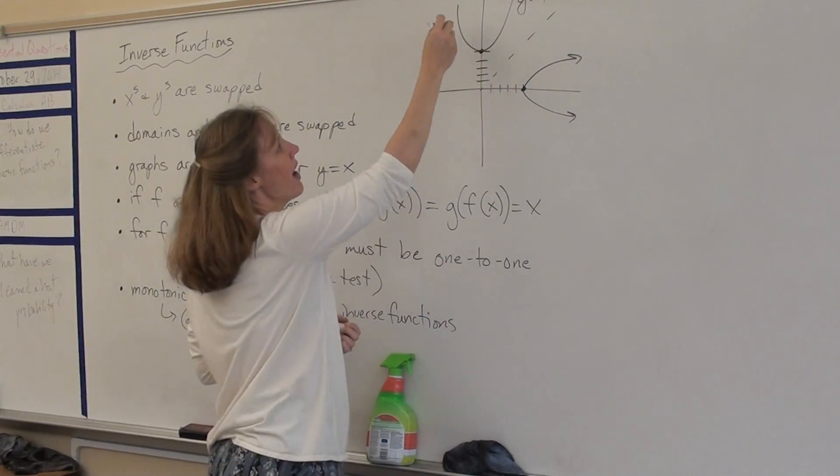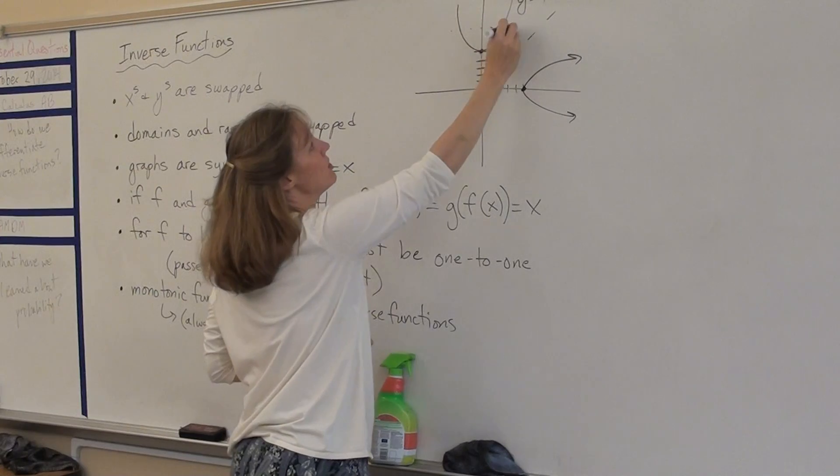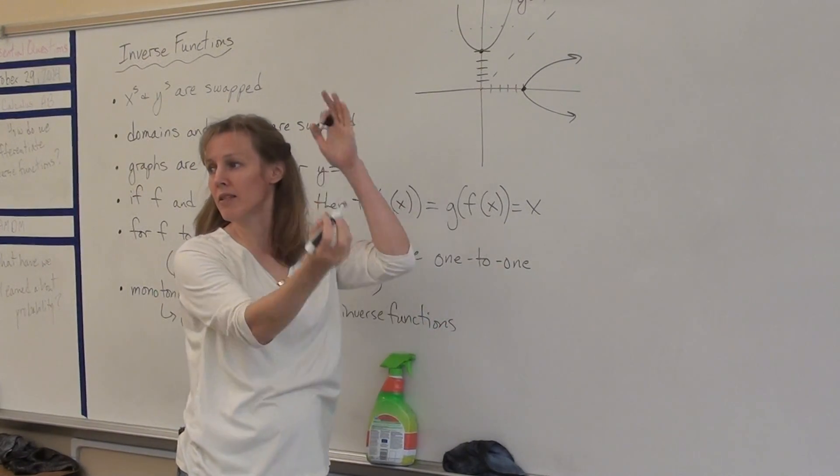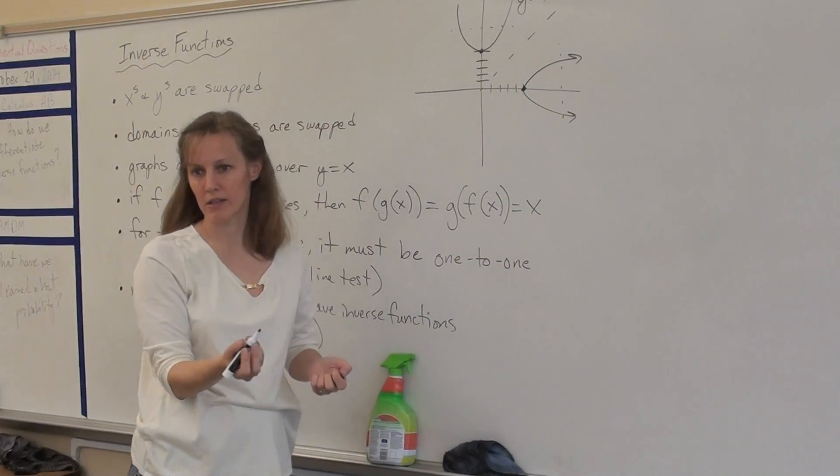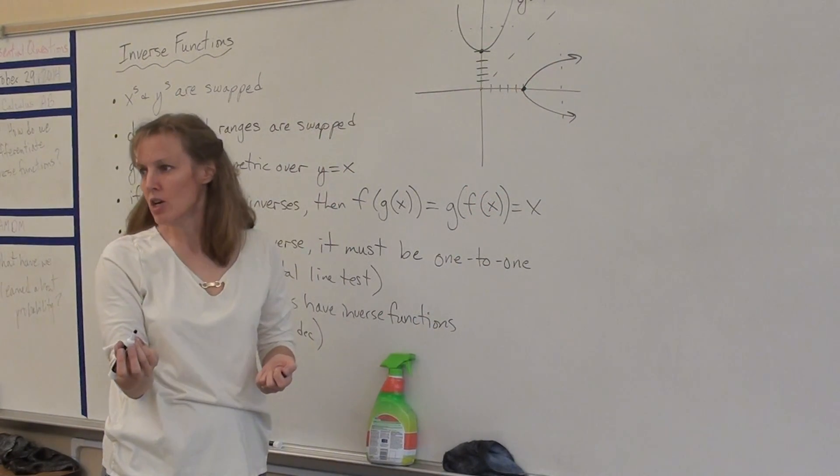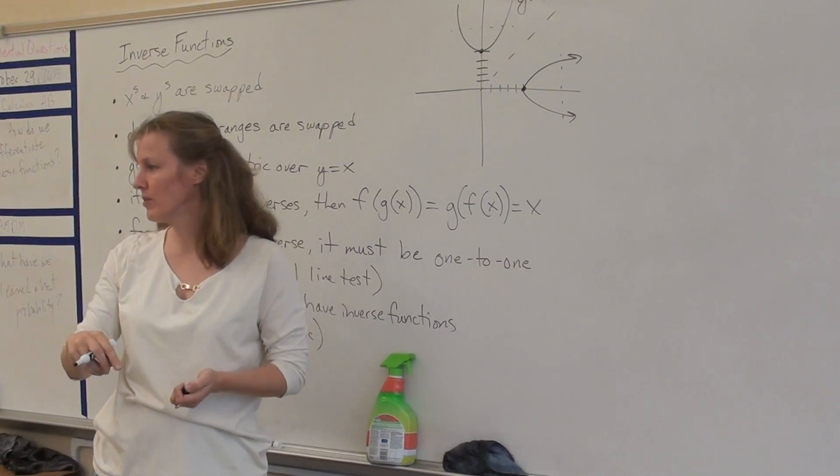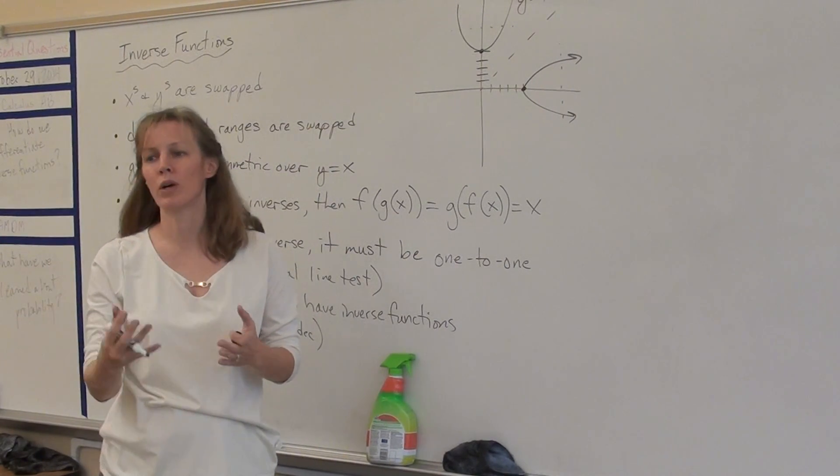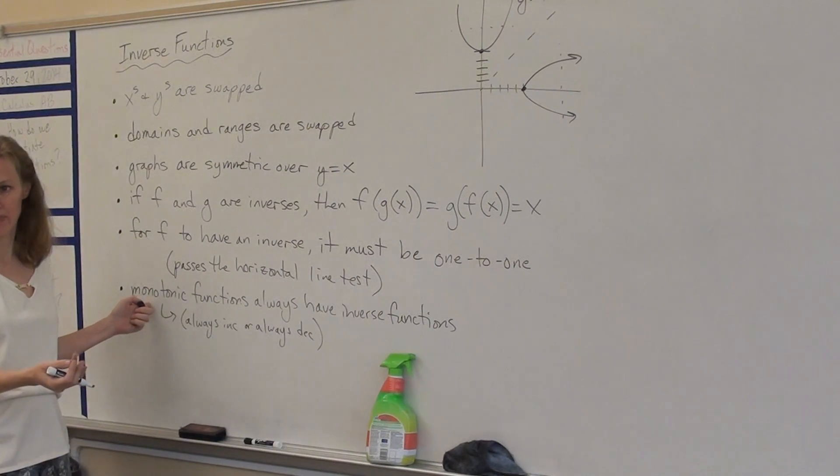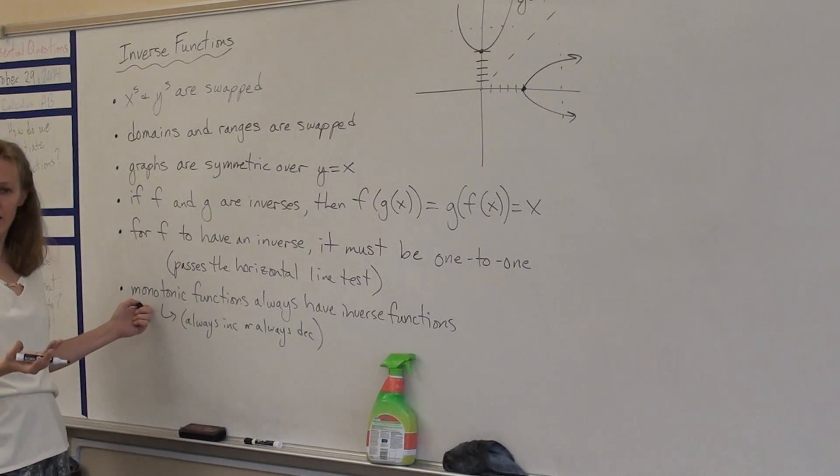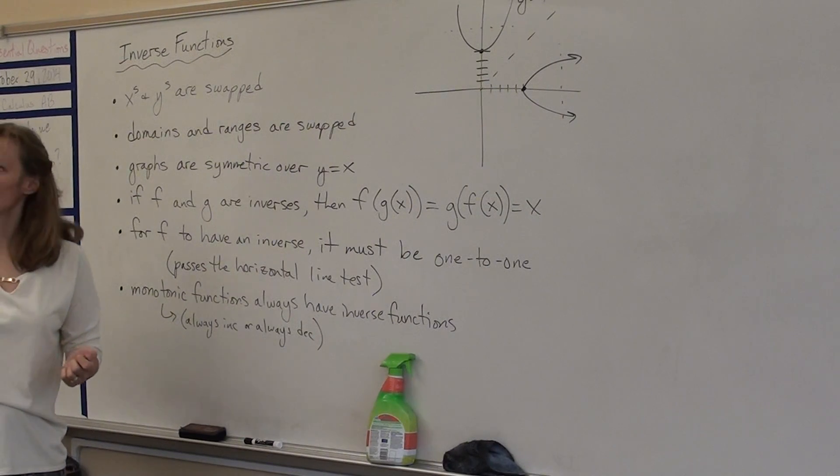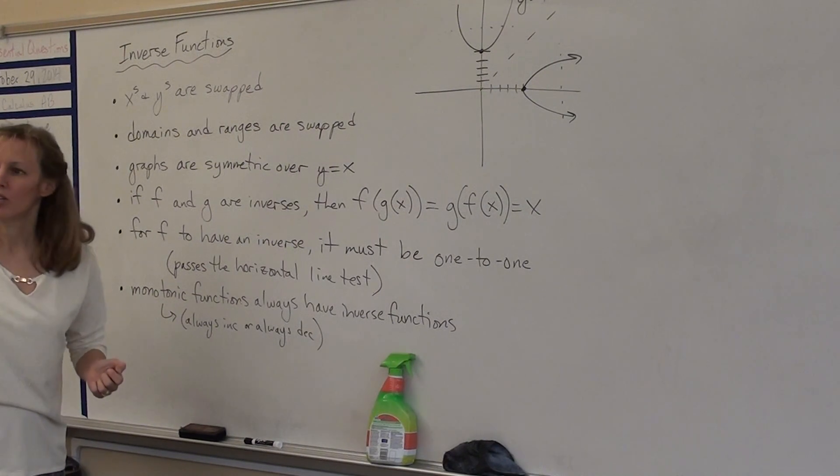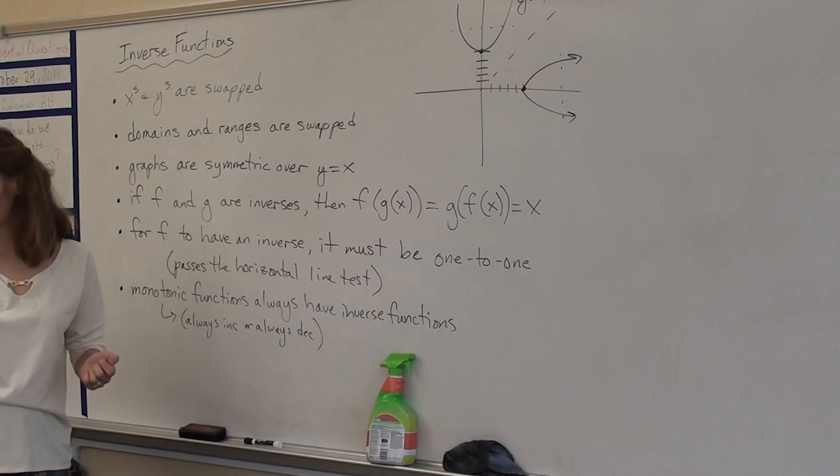If this graph, the original graph, fails the horizontal line test, then the inverse, since it gets that rotation, is going to fail the vertical line test. Does that make sense? So an original function, for it to have an inverse, it has to be what's called monotonic. Monotonic means it only goes in one direction. It has to be always increasing or always decreasing. As soon as you change direction, you fail that horizontal line test.